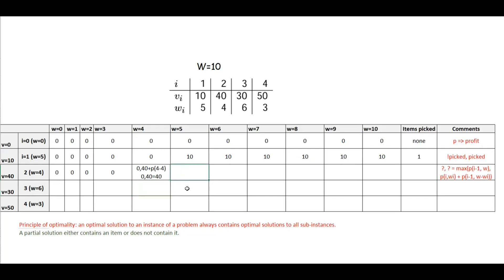Next we have w equal to 5. We apply the principle of optimality — whichever gives the better value, we take it. If we do not pick up this item, our profit is 10. If we pick up this item, our profit is going to be 40 plus profit from the remaining weight, which is 5 minus 4 equals 1. Profit at 1 is 0. So we get either 10 or 40 plus 0, which gives us 40. Similarly we will get the same answer for w equal to 6, so we write down 40.